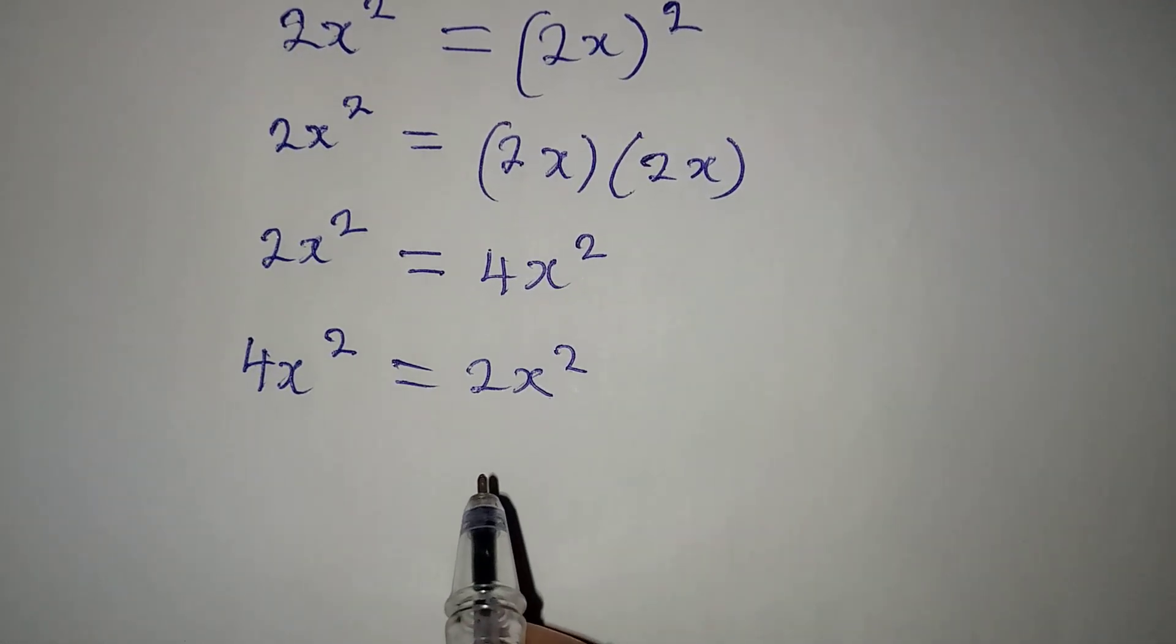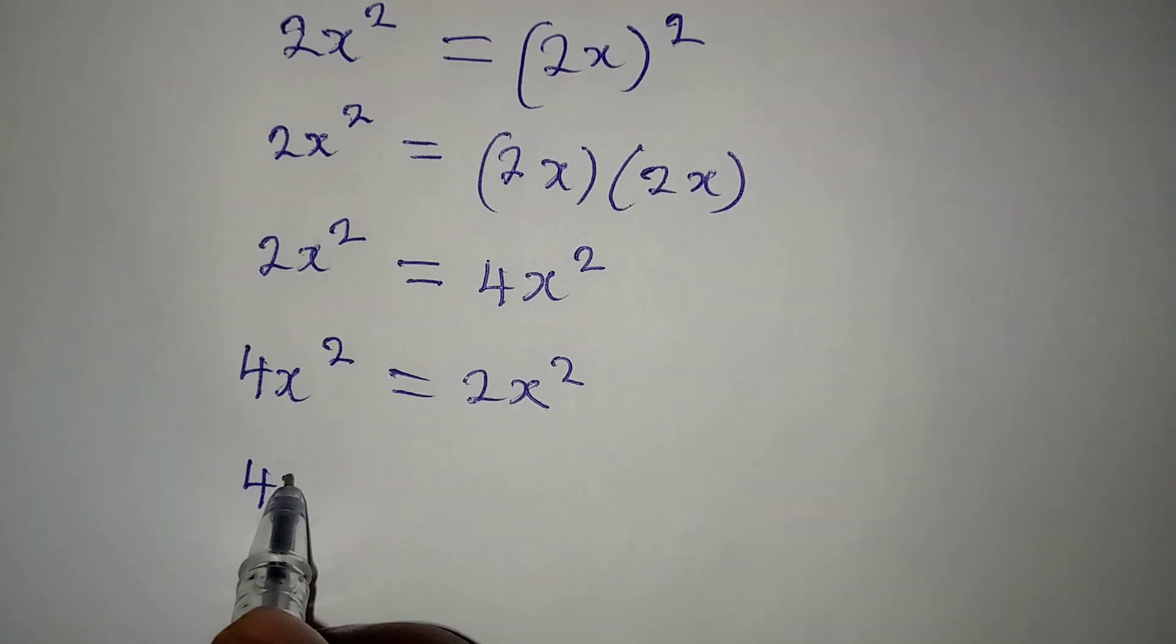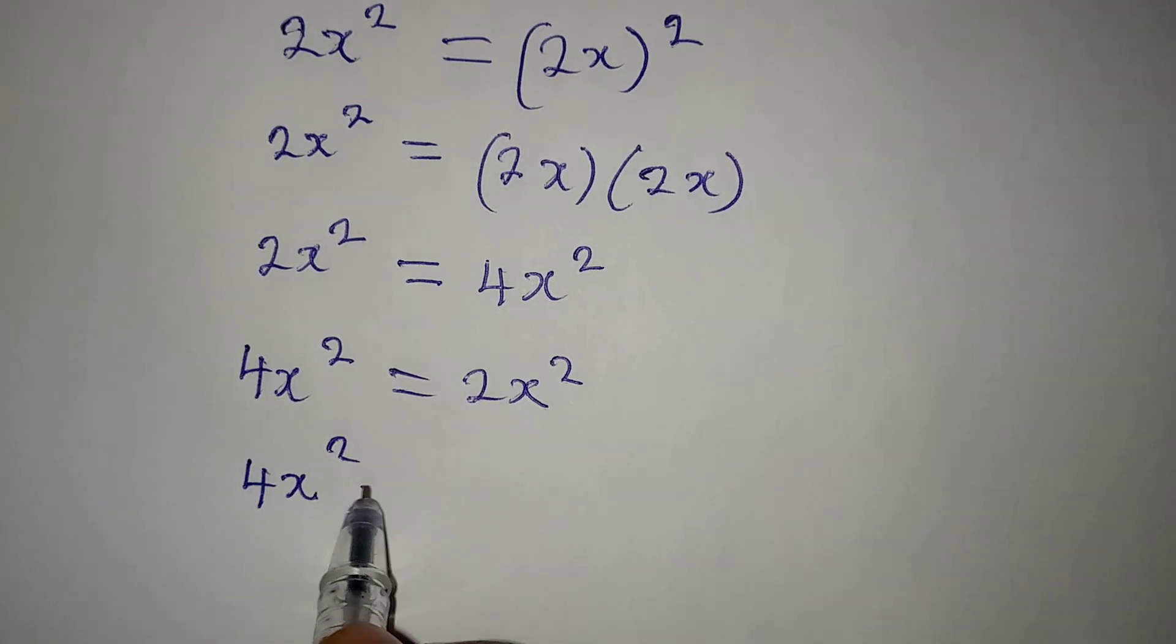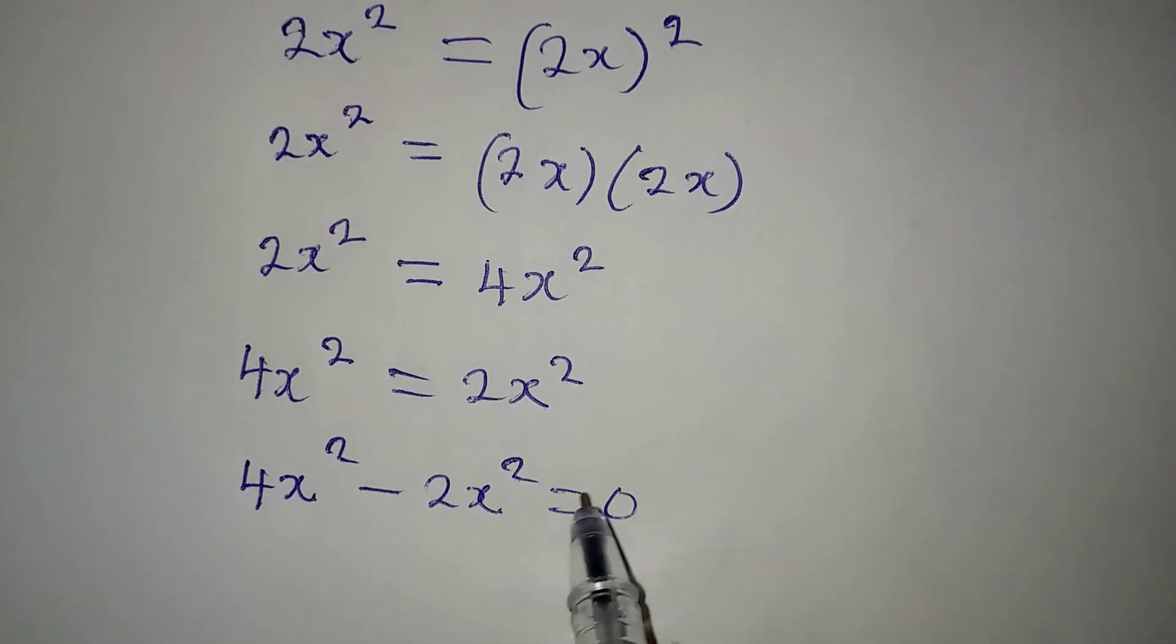And from here, what do you think we can do? We can say that 4x² - 2x² = 0.